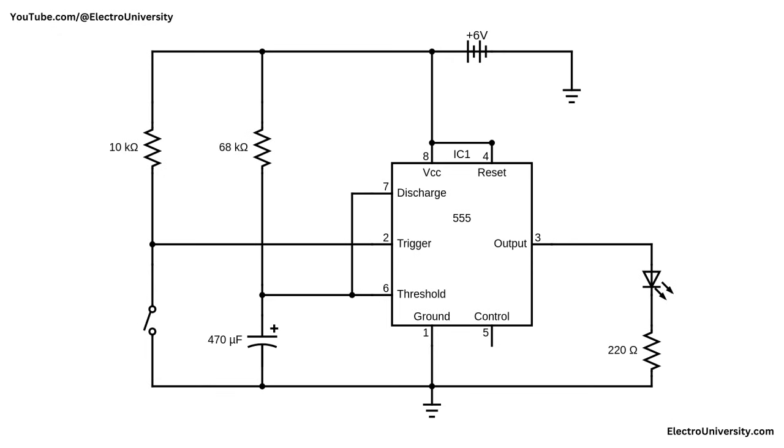Once the timer is triggered, the 470 microfarad capacitor begins charging through the 68,000 ohms and 10,000 ohms resistors. This resistor-capacitor network controls the delay duration. The charging process continues until the voltage across the capacitor reaches two-thirds of the supply voltage. At that point, the 555's internal threshold comparator resets the flip-flop, which turns the output low again. When the output goes low, the LED turns off. The capacitor then quickly discharges through pin 7 or discharge, and the timer is ready for the next cycle.